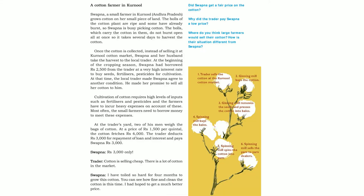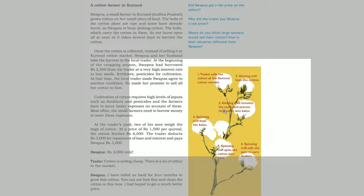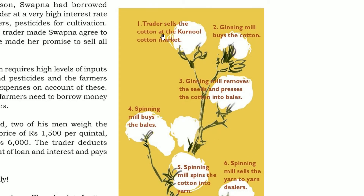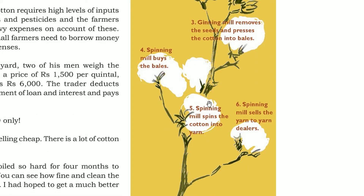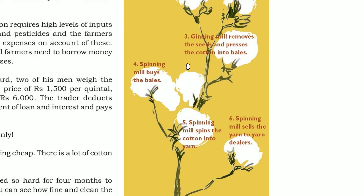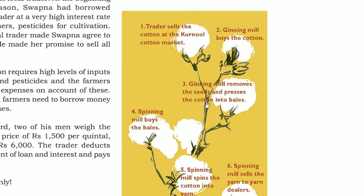Here is the chain: the trader sells the cotton at the Kurnool cotton market. Then the ginning mill buys the cotton, removes the seeds, and presses it into bales. The spinning mills then buy these bales, spin the cotton into yarn, and sell the yarn to yarn dealers. These are the different steps in the chain of events that takes place.